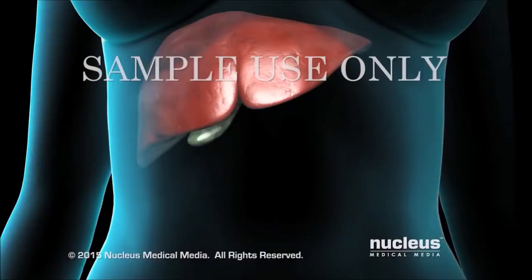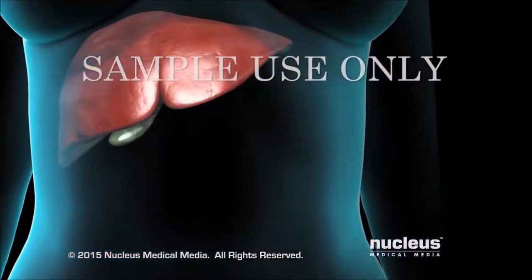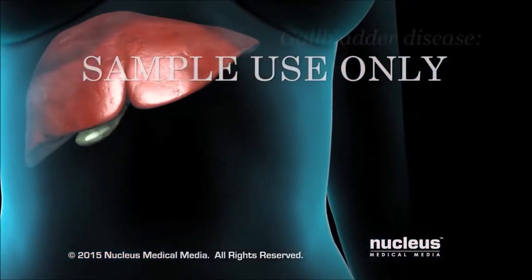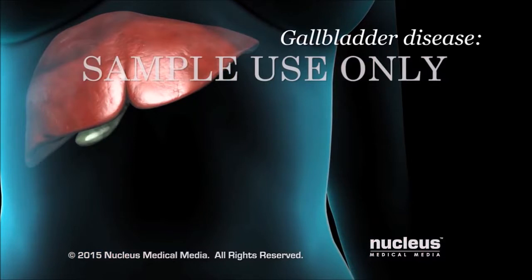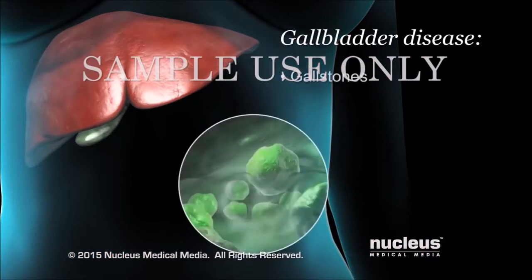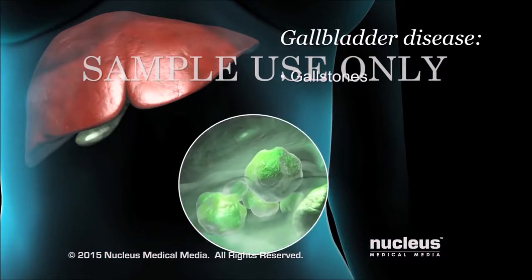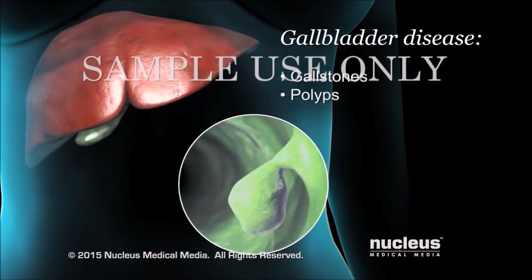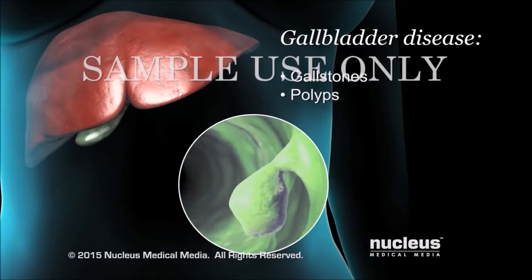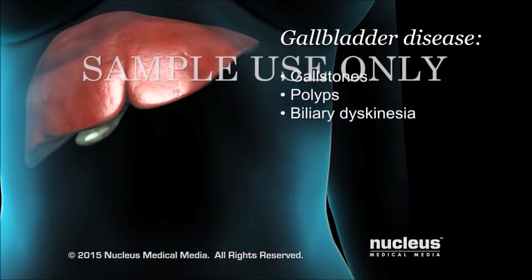Cholecystectomy is a surgical procedure to remove the gallbladder. It is usually done when there is evidence of gallbladder disease, such as gallstones or polyps. It is also done for biliary dyskinesia, which is a condition where the gallbladder doesn't work properly.